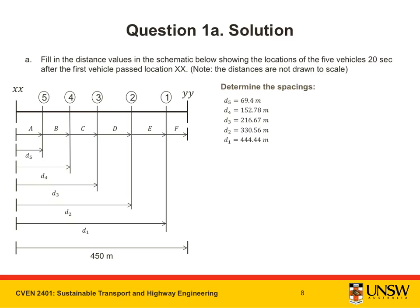Now we can use these distances to determine the spacing between each vehicle. A is simply the distance travelled by vehicle 5, which is 69.4 meters. You can calculate the distance B by deducting D5 out of D4, which gives you a value of 83.33 meters.